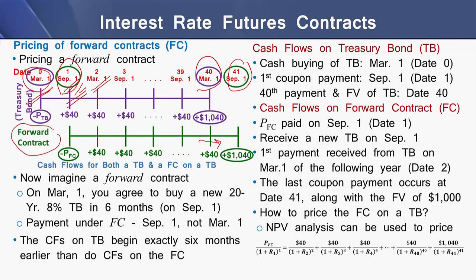Looking at the cash flows on the treasury bond: the buying of the treasury bond is on March 1 at time 0. The first coupon payment occurs on September 1, which is date 1. There are 40 payments in total, and both the final coupon and the face value payment occur on date 40. For the forward contract, the price of the forward contract is paid on September 1, which is date 1.